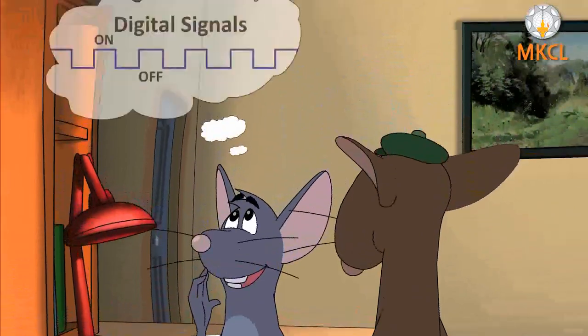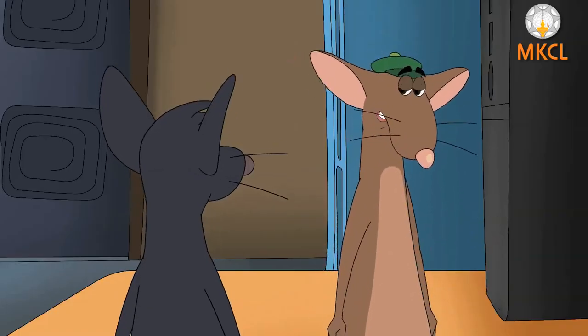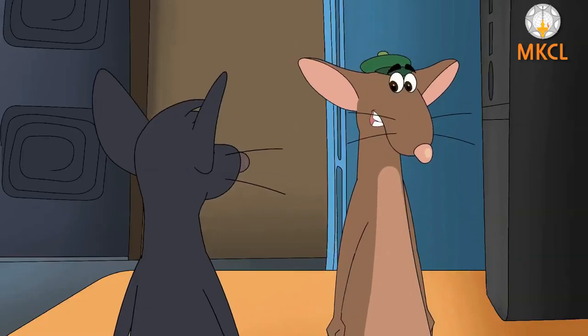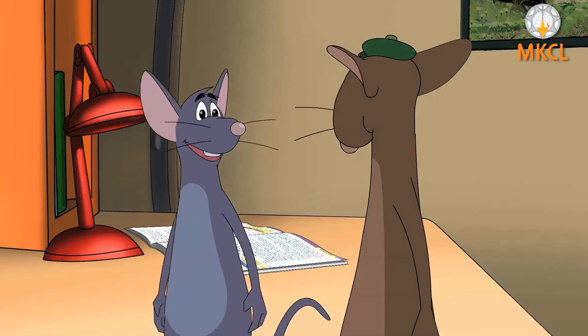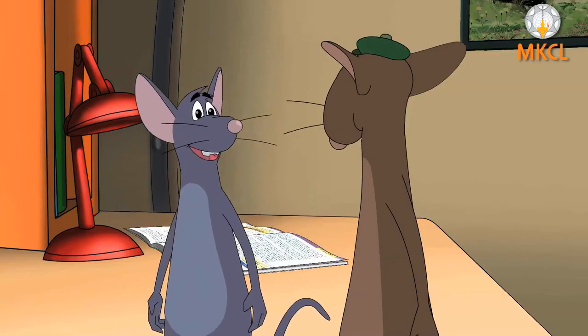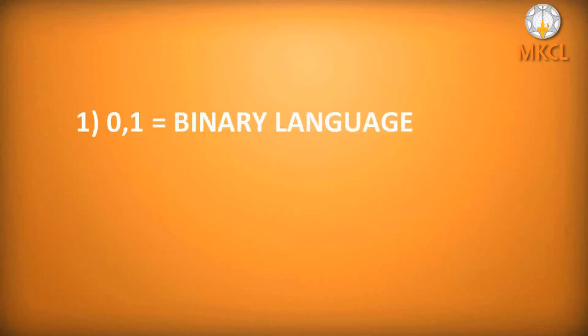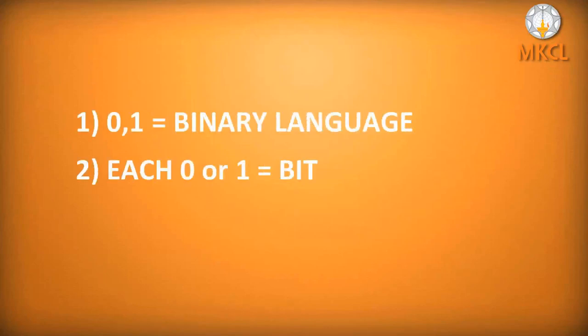But as we saw earlier, the computer only understands on and off. Exactly — so the computer only understands 0, which equals off or no charge, and 1, which equals on or positive charge. This 0 and 1 language is called binary, and each 0 or 1 is called a bit, which is short for binary digit.